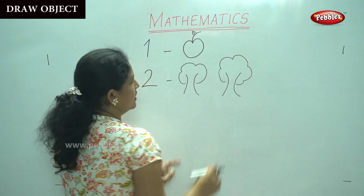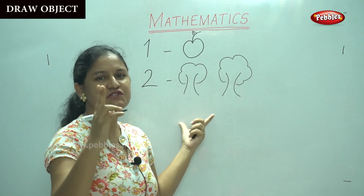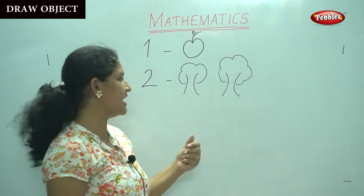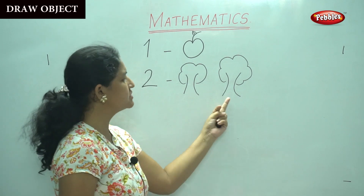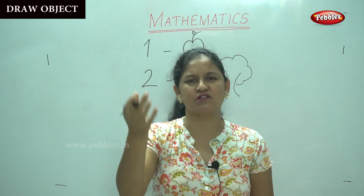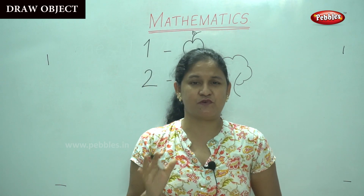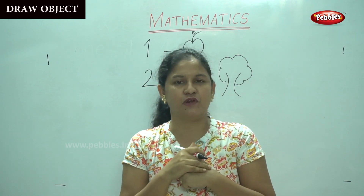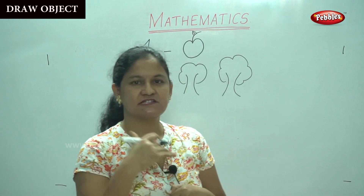So, how many objects did we draw for number 2? 2 trees. We can count it: 1 tree, 2 trees. If you have color pencils with you, you could also color the trees to make it look more colorful, and you can give whatever colors you want.